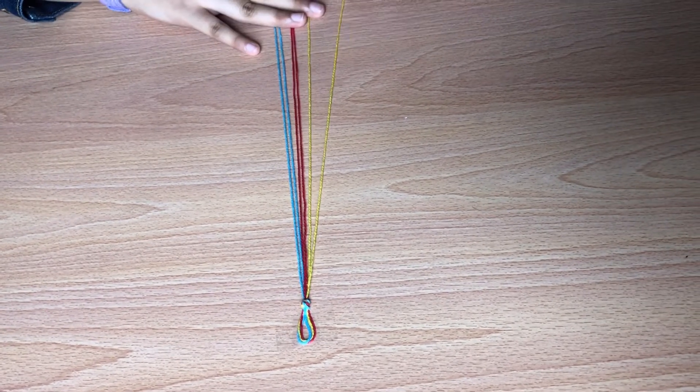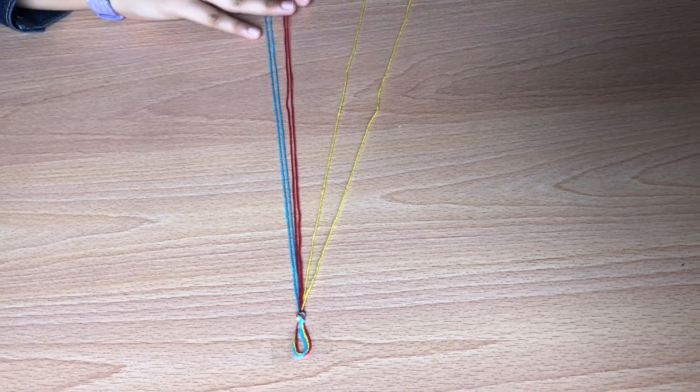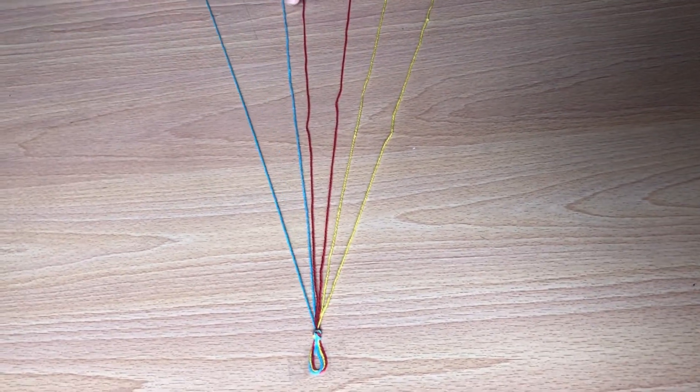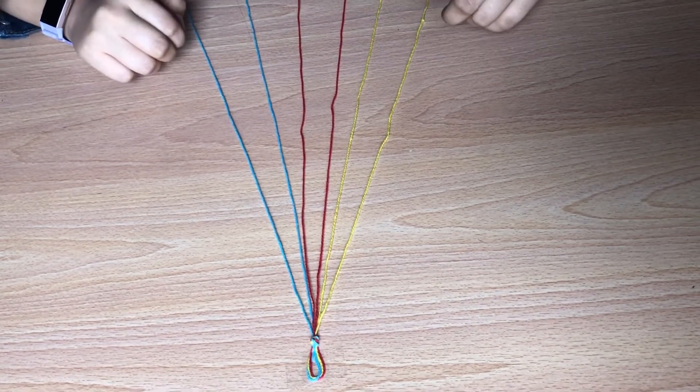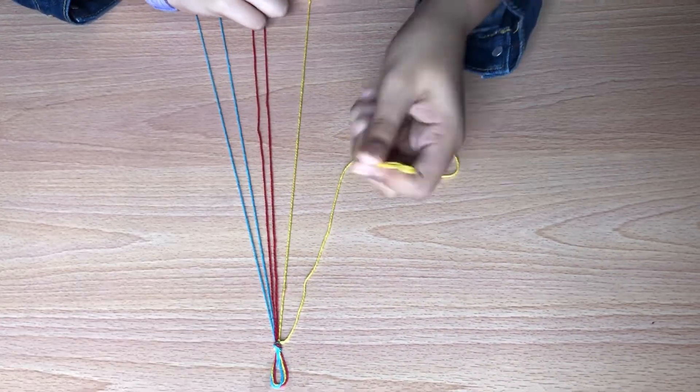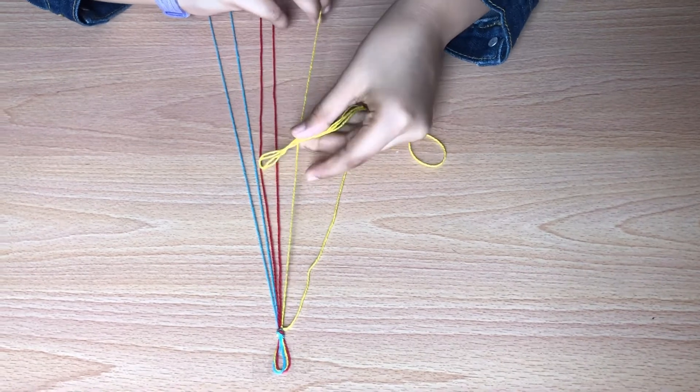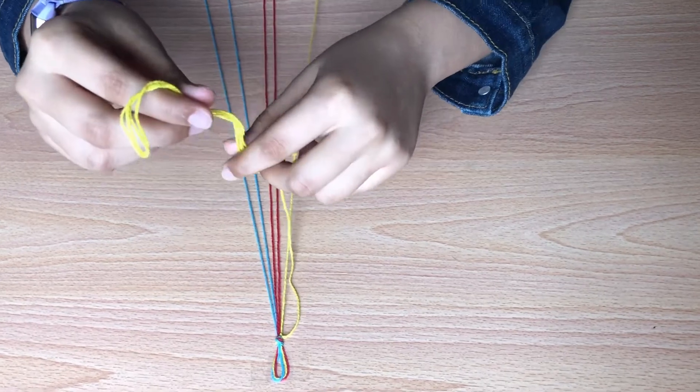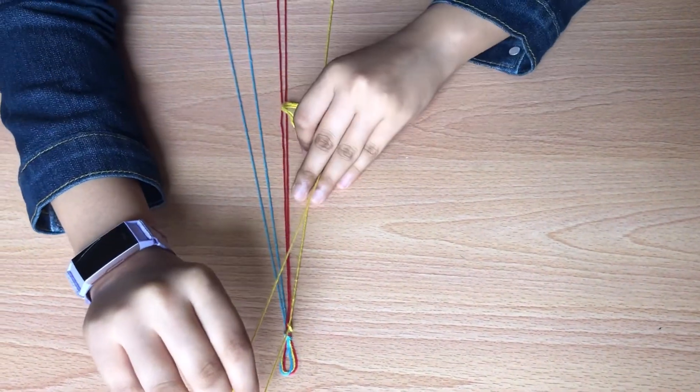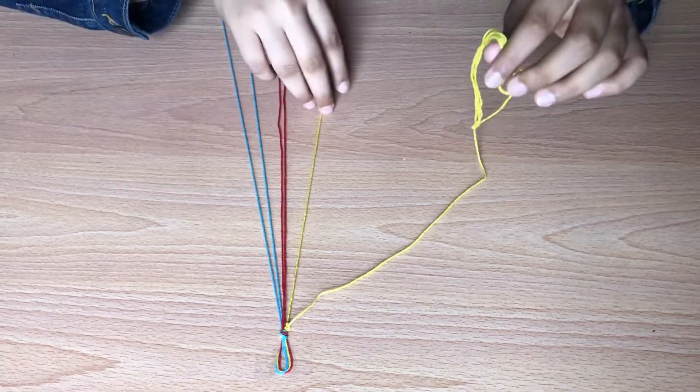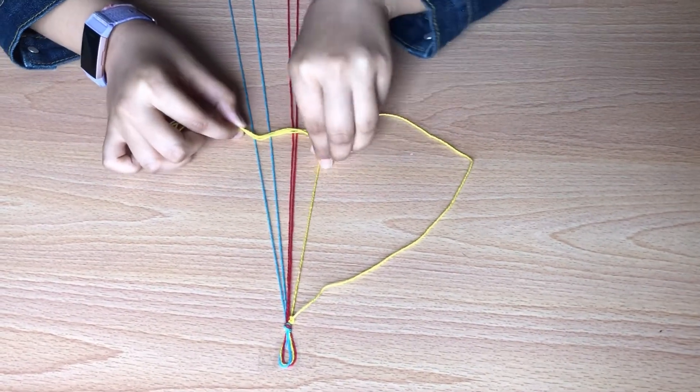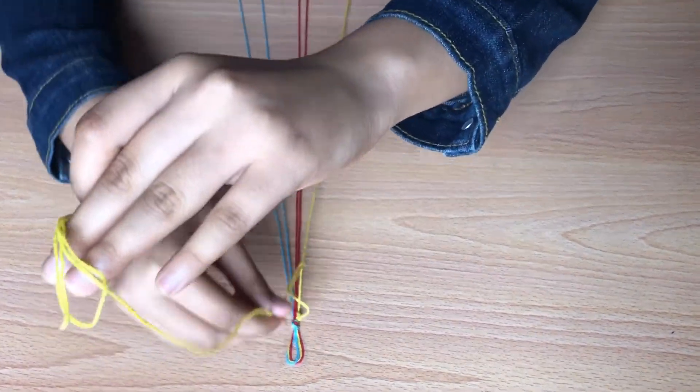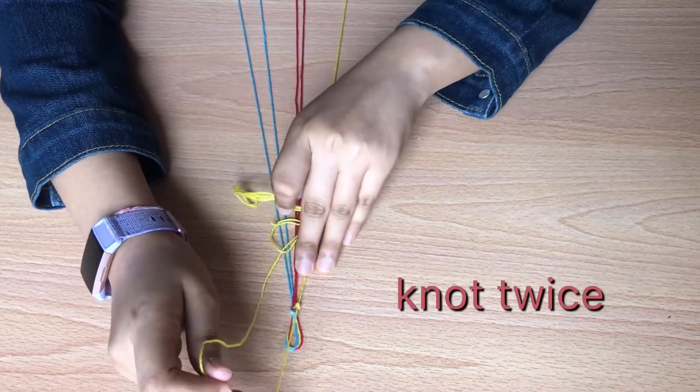Now we'll be spreading these pieces of thread out one by one and make sure to follow this pattern of color. Here I've taken the left most string and I'm gonna make a four knot on the string next to it. Pull tight. Also remember to knot twice for every string.